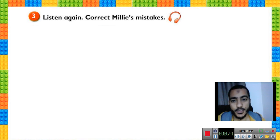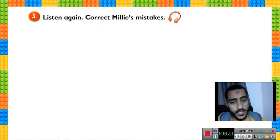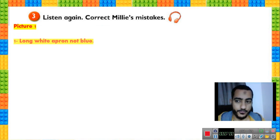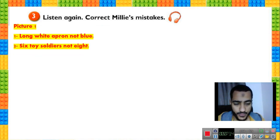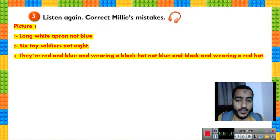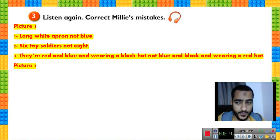Exercise number three: listen again and correct Millie's mistakes. Your turn to mention and correct the mistakes. Picture number one, mistake one: it's a long white apron, not blue — she said blue apron. Mistake number two: six toy soldiers, not eight — she said eight. Mistake number three: they are red and blue and wearing a black hat — she said blue and black wearing a red hat, which is wrong.